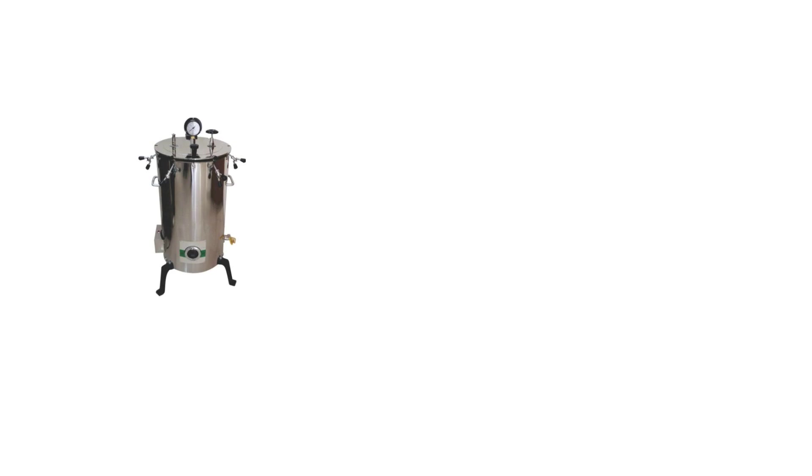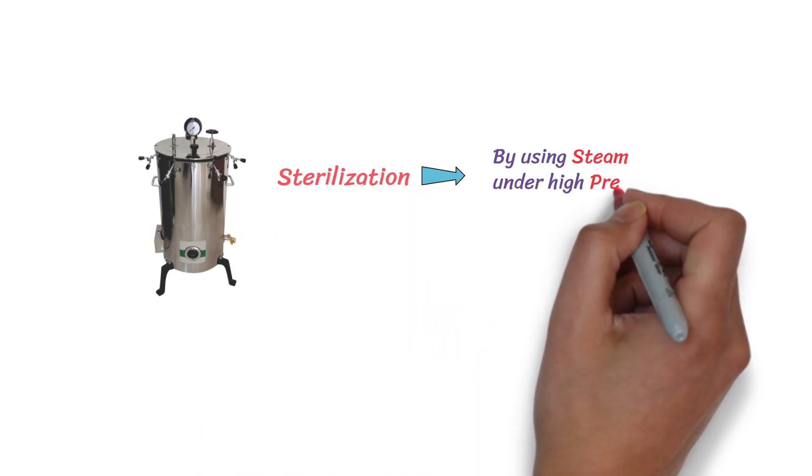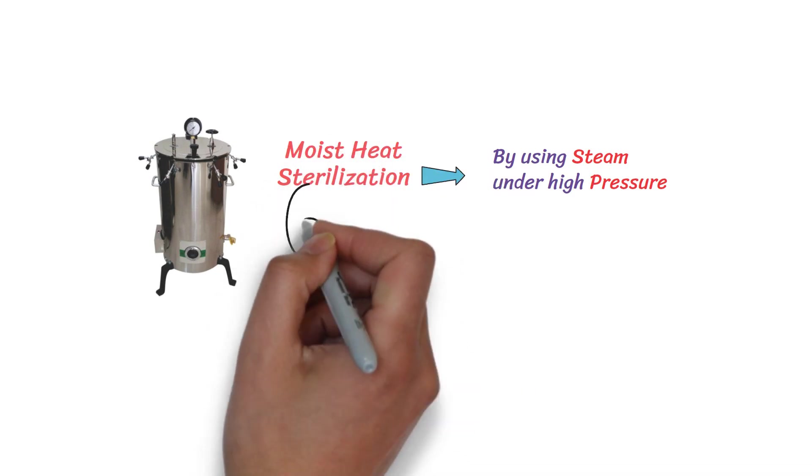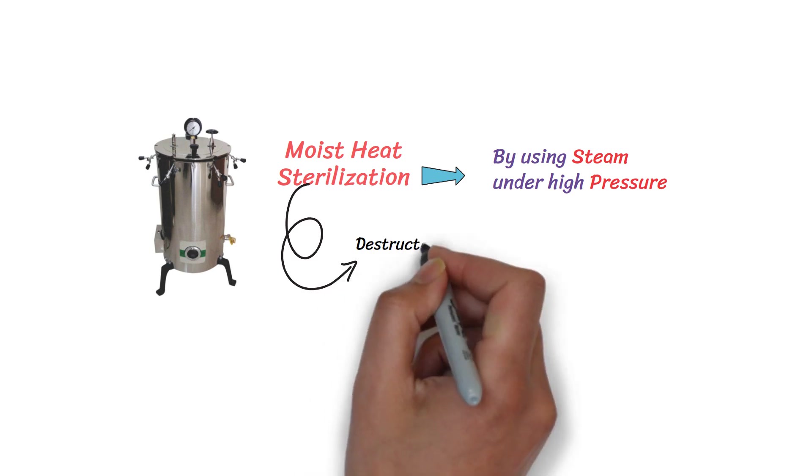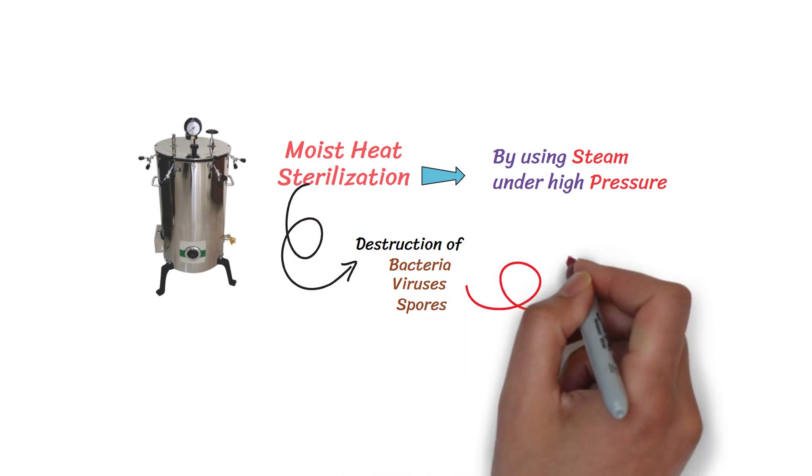An autoclave is a device used for sterilization by using steam under high pressure. It works on the principle of moist heat sterilization, which involves the destruction of microorganisms, including bacteria, viruses, and spores, through the use of pressurized steam.